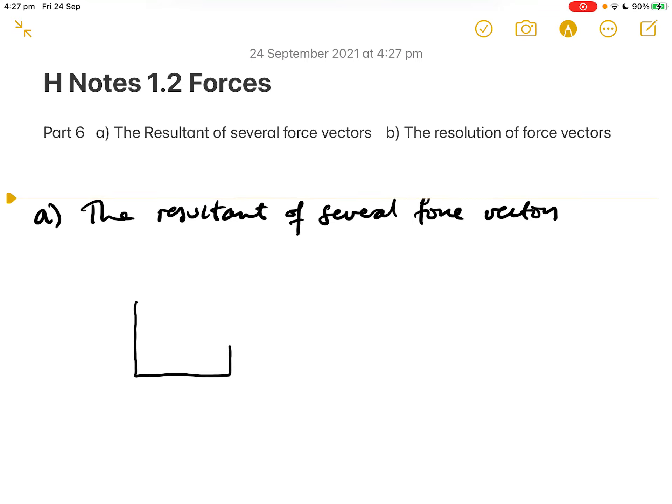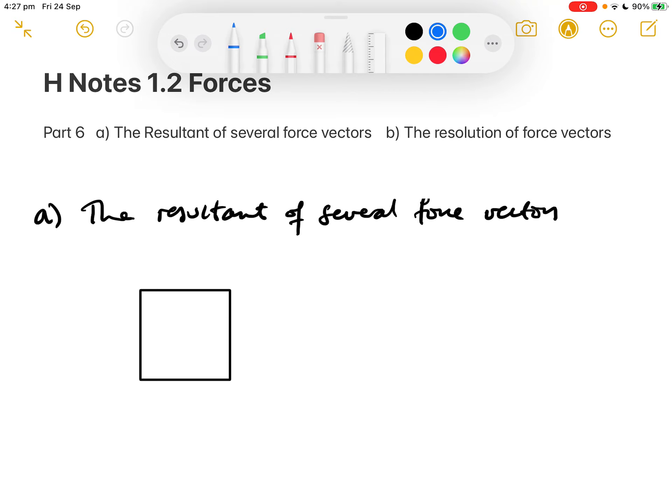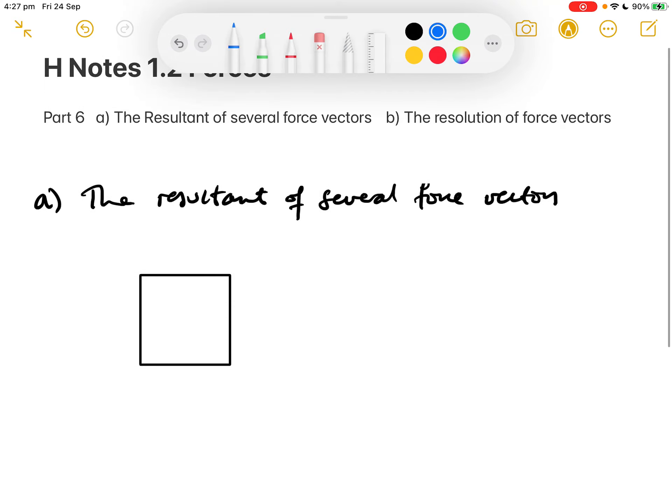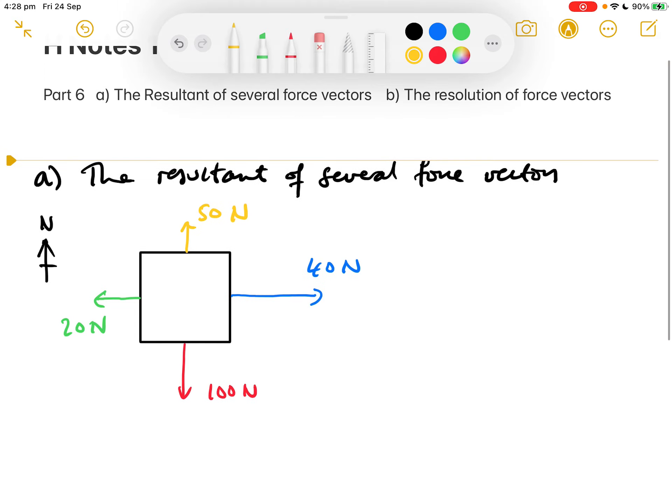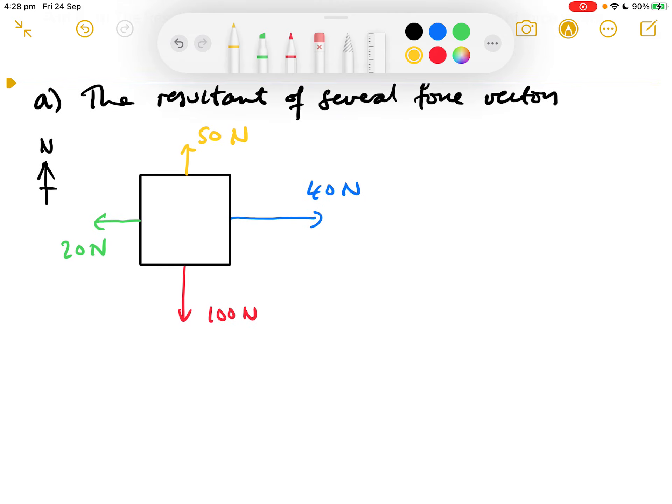I'll start with a fairly simple case in which we have a body like this. Let's imagine that this is north to give us a reference direction. And we might have 40 Newtons in that direction, so that's east, 20 Newtons in that direction, 100 Newtons in that direction, and let's say 50 Newtons in that direction. So the question is, what is the resultant of all of these forces?